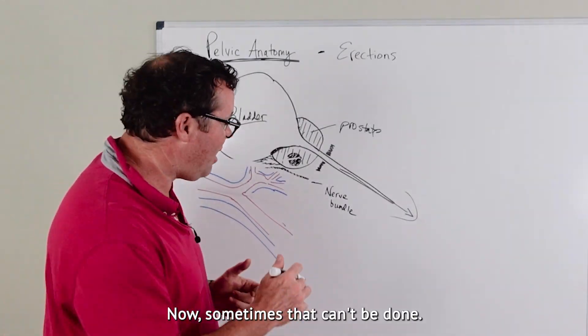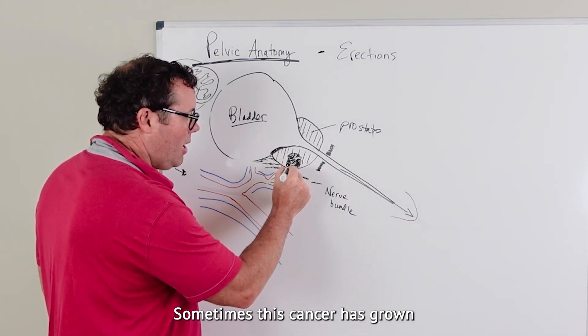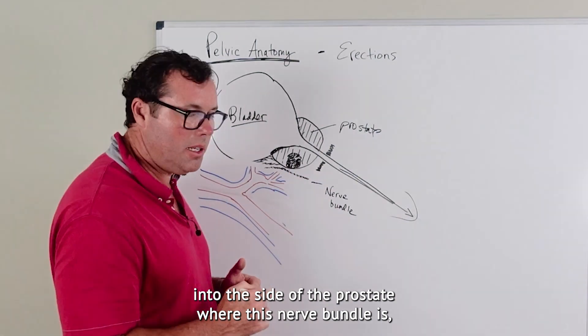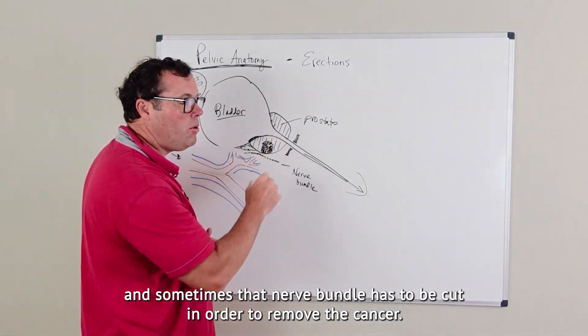Now sometimes that can't be done. Sometimes this cancer has grown into the side of the prostate where this nerve bundle is, and sometimes that nerve bundle has to be cut in order to remove the cancer.